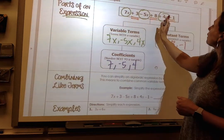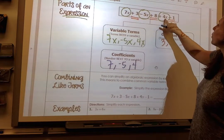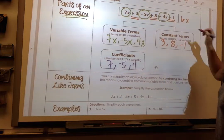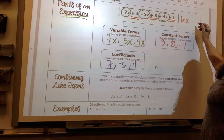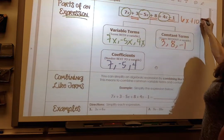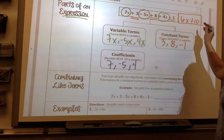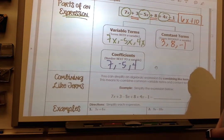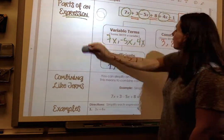So I have a 7x and a negative 5x and a 4x. That's 2x and 4x, which is 6x. And if I combine my constant terms, I have 3 and 8, which is 11, minus 1 is positive 10. So when I simplify this expression, I'm going to get 6x plus 10.